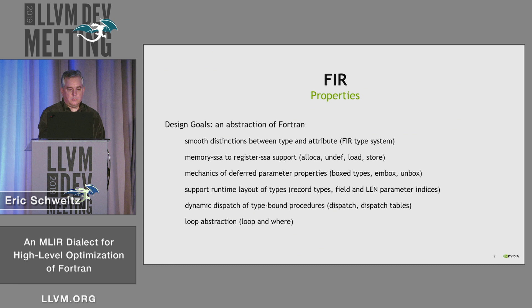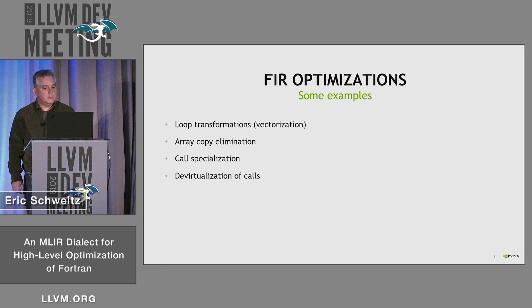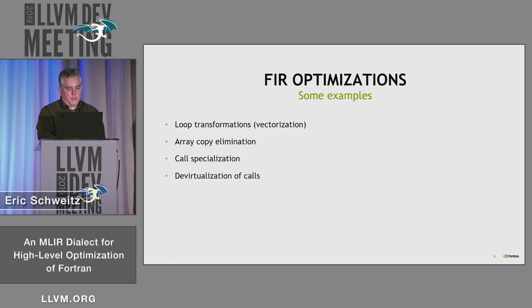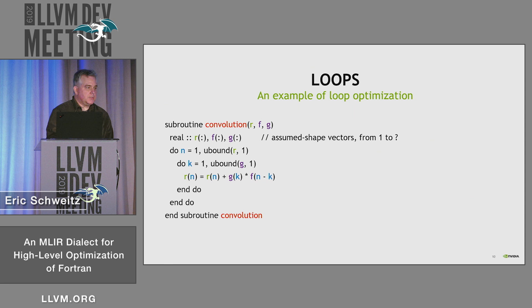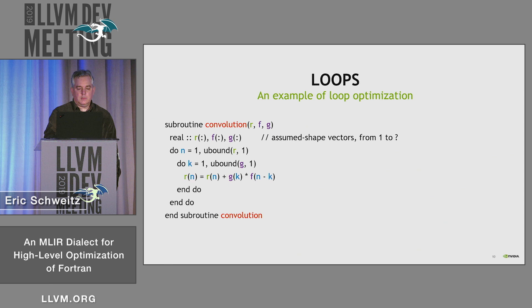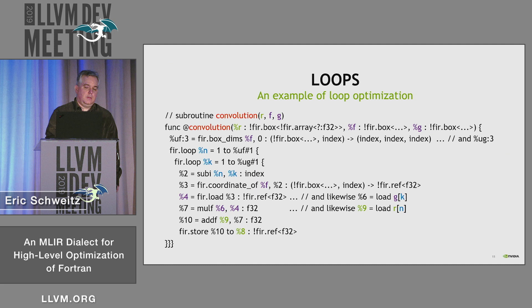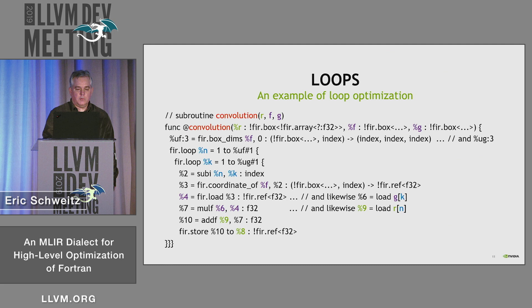Now I'd like to walk through some example optimizations we have mocked up. First, loop transformations and specifically vectorization. These are just pseudocode — this example is supposed to be convolution. F and G are the input vectors and R is an output vector. There's a doubly nested loop to compute the convolution on these vectors. When we translate that to FIR, a lot of code is omitted because it would be verbose and wouldn't fit on the screen.